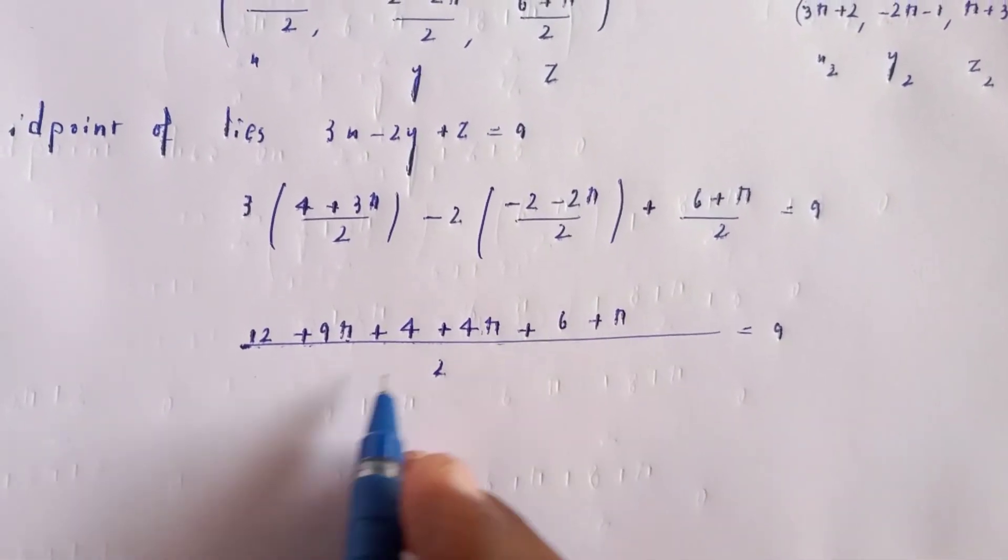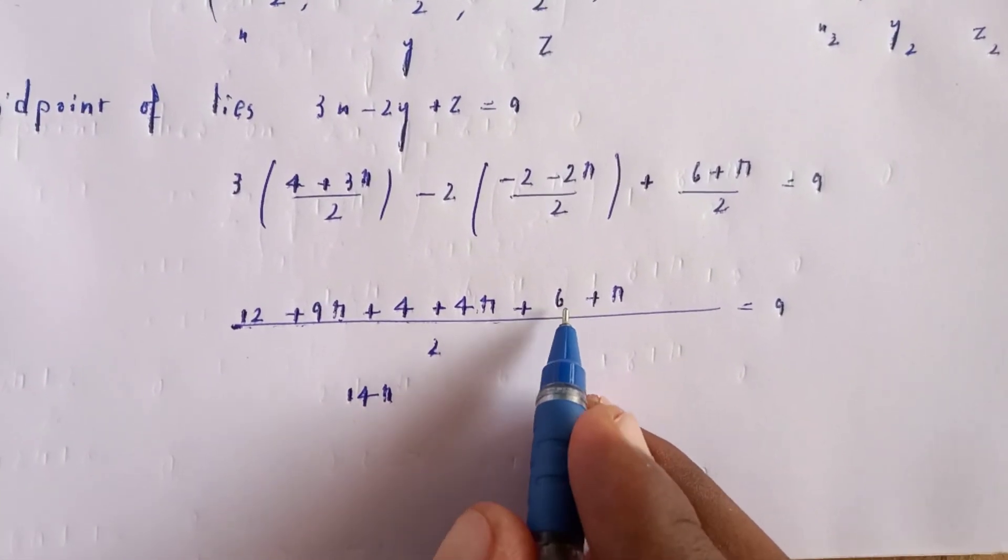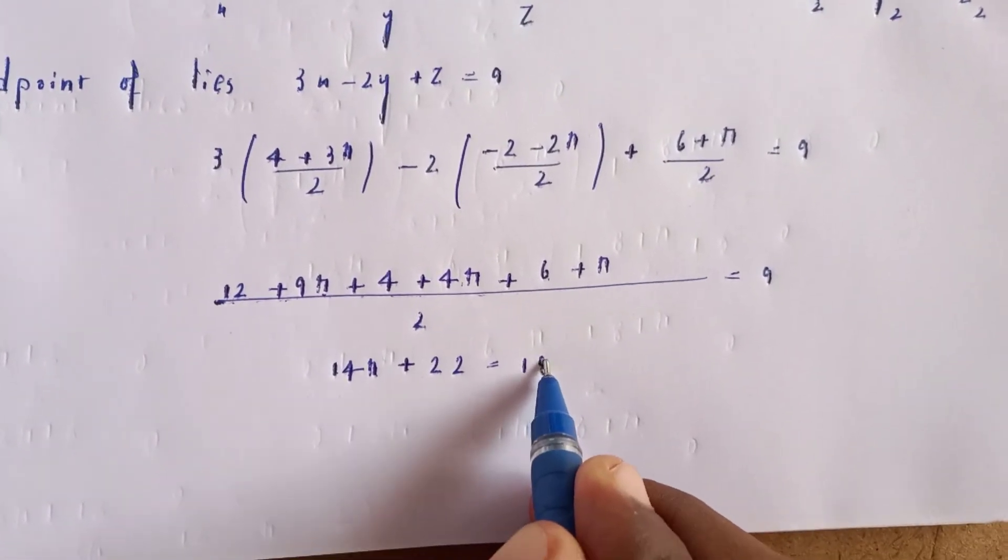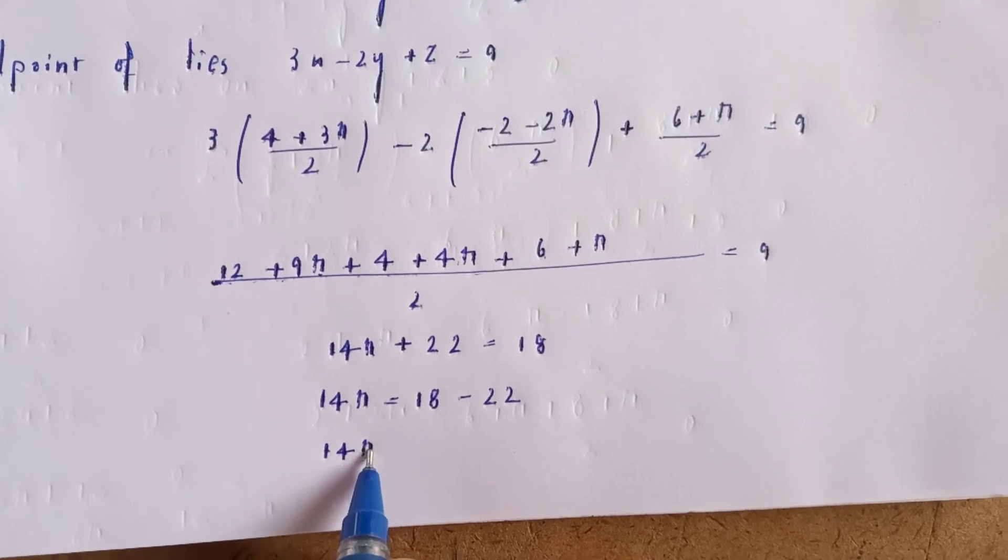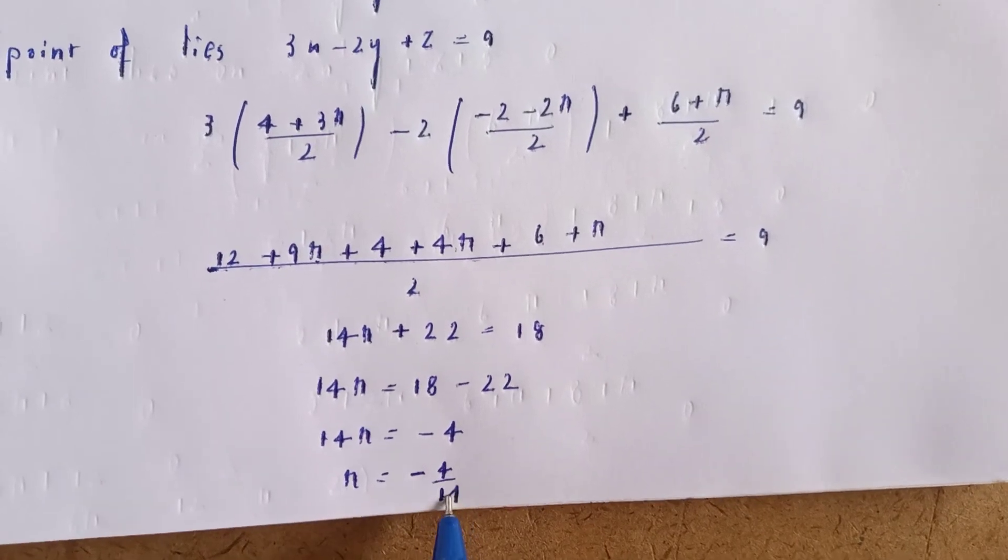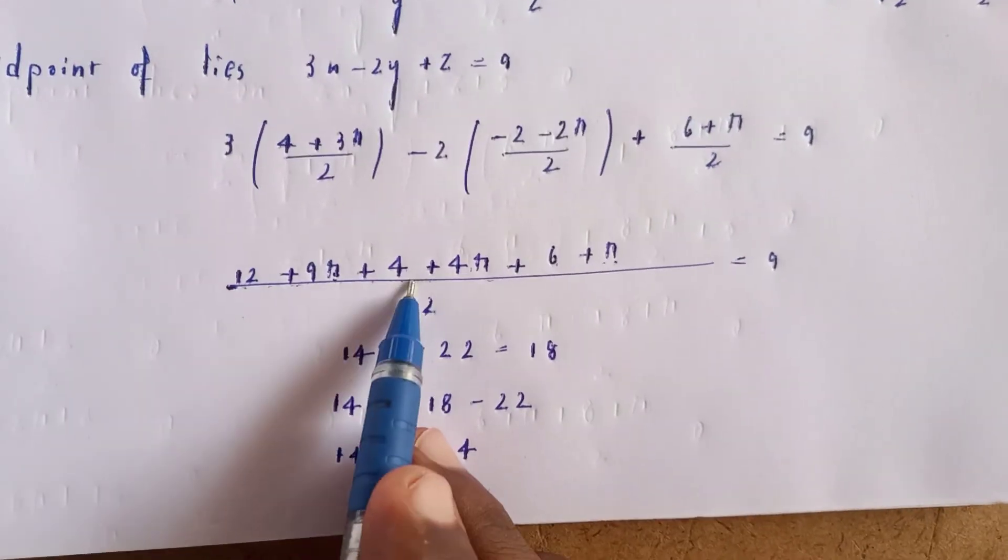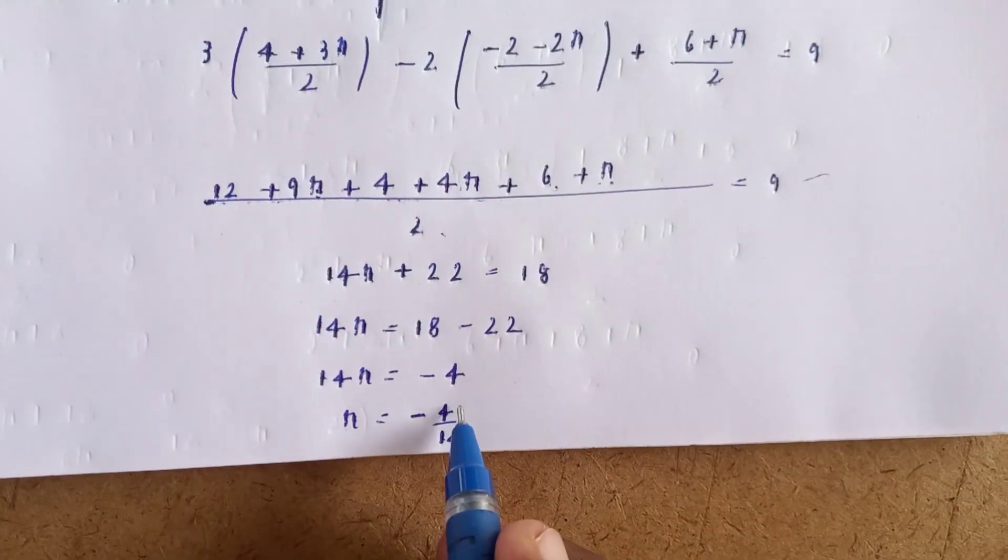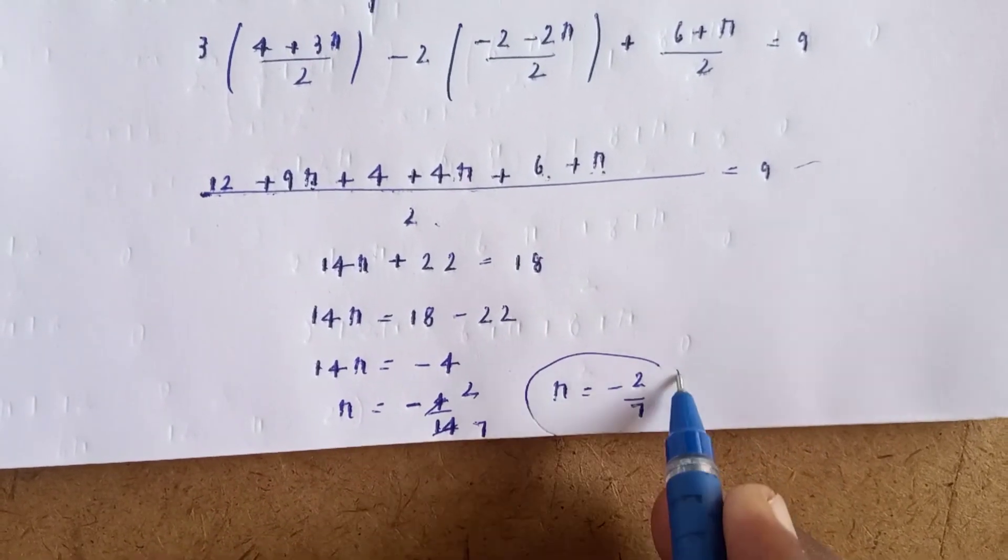Combining terms: 9r + 4r + r = 14r, and 12 + 4 + 6 = 22. So 14r + 22 = 18. Therefore, 14r = 18 - 22 = -4, which gives r = -4/14 = -2/7.